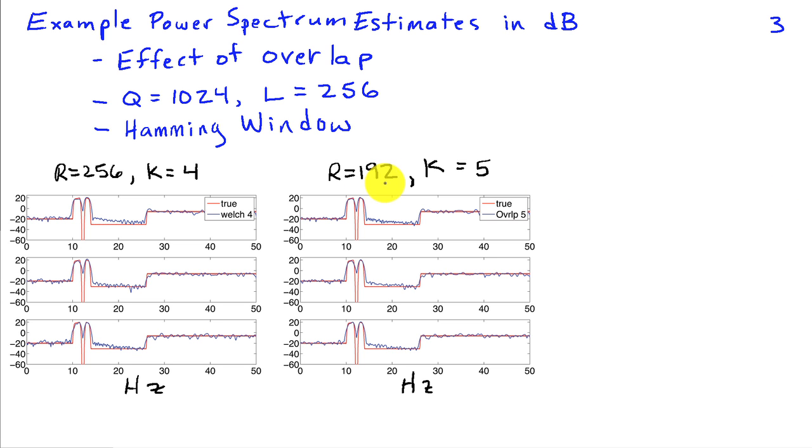When we go to R equals 192, now in this case, we have an overlap of 64 points for each segment. Now because the hamming window is decreasing toward the end and increasing toward the beginning, those 64 point overlap is relatively, that data is de-emphasized, because of the window. And consequently, there's not a great loss of independence between the spectrum estimates. And you can see a slight reduction. Now here we have five segments when we do it this way. So there's just a slight reduction in variance that's apparent between these two cases.